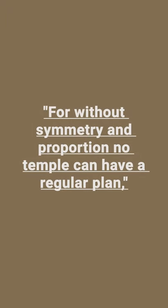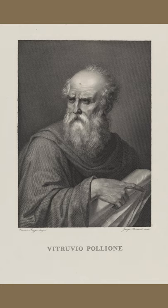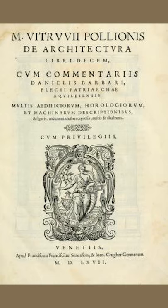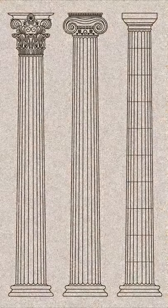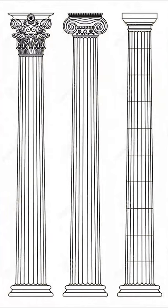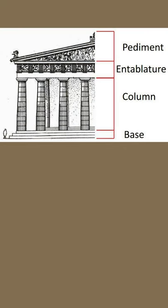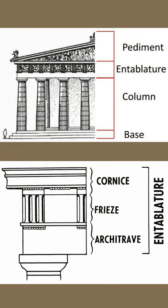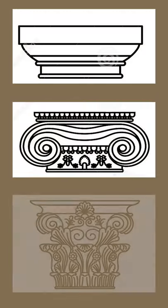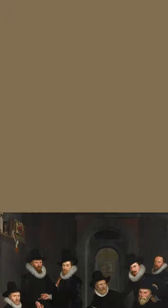"For without symmetry and proportion, no temple can have a regular plan," Vitruvius wrote in his famous treatise on architecture. He introduced the classical orders which defined the column styles and entablature design used in classical architecture. The earliest classical orders were Doric, Ionic, and Corinthian.